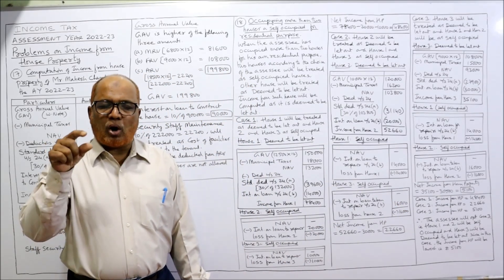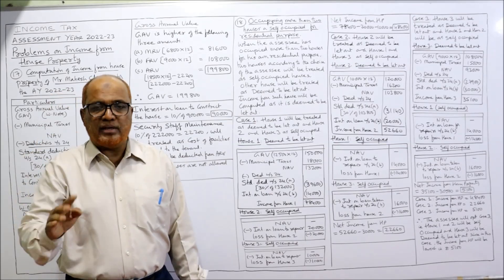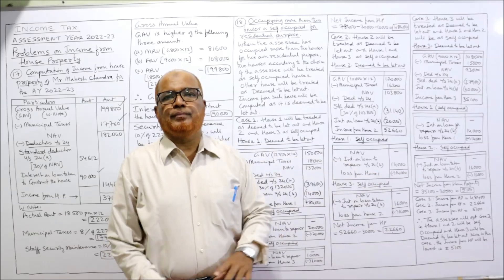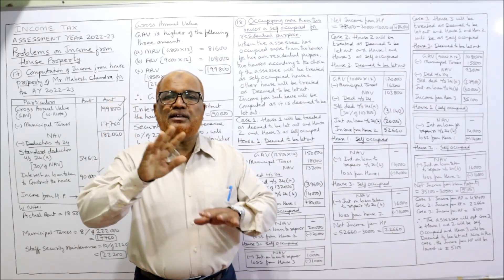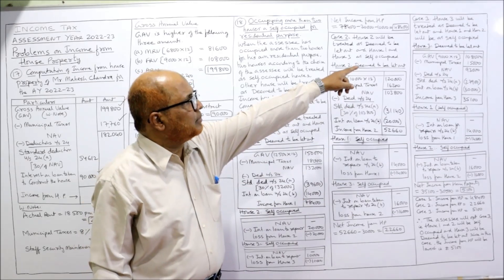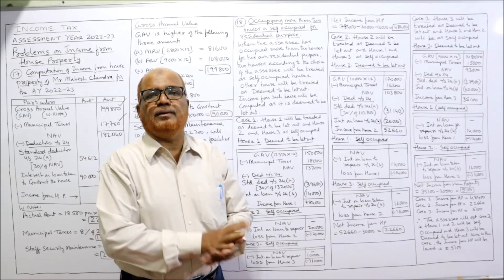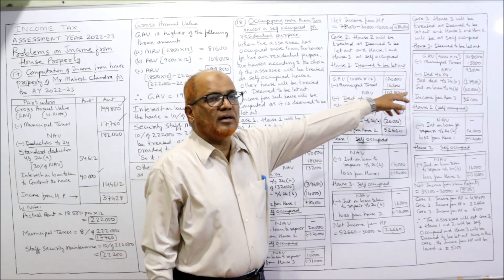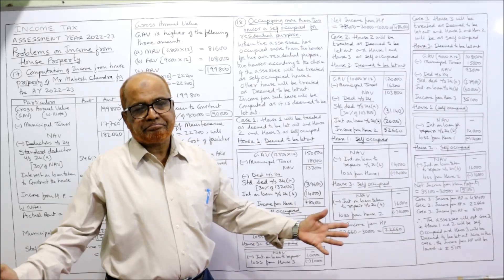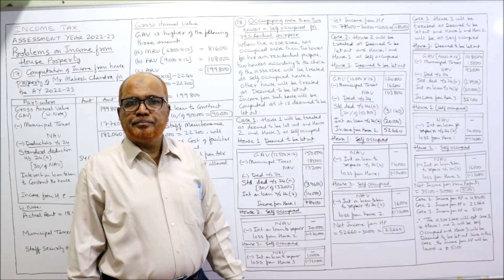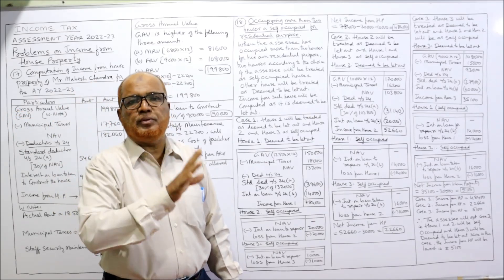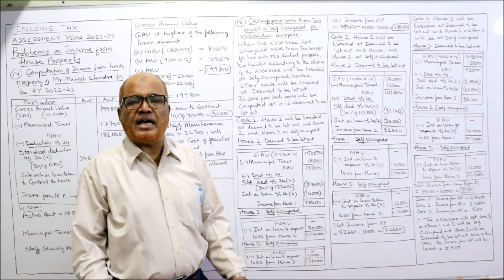Comparing all three cases: Case 1 income from house property = 48,400; Case 2 = 22,660; Case 3 = 5,100. The minimum is 5,100, so the assessee will choose option 3 — house number 3 treated as deemed to be let out and houses 1 and 2 treated as self-occupied. That option is most beneficial; his tax liability will be least. If he chooses options 1 or 2, his tax liability will be more. The new point: an assessee can keep only two houses as self-occupied; remaining houses will be treated as deemed to be let out.